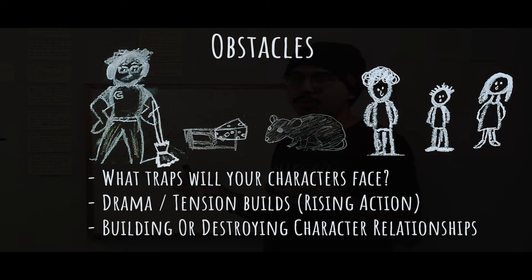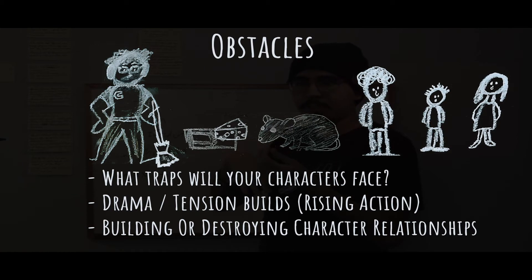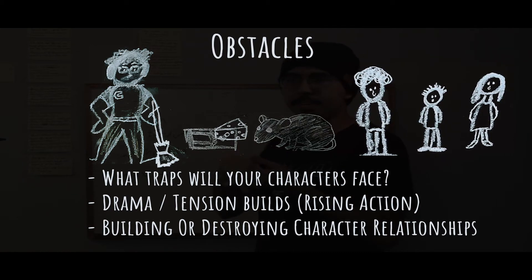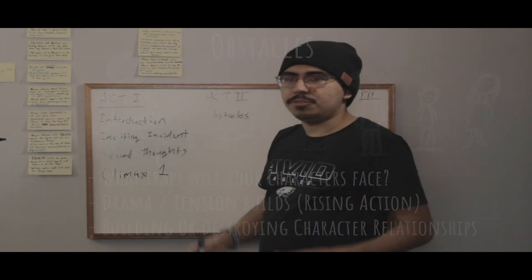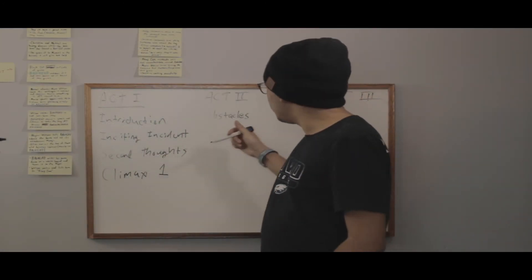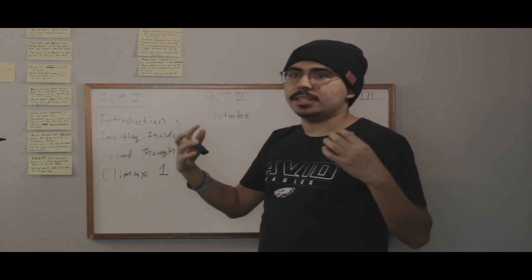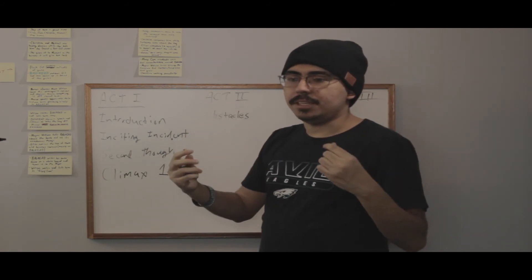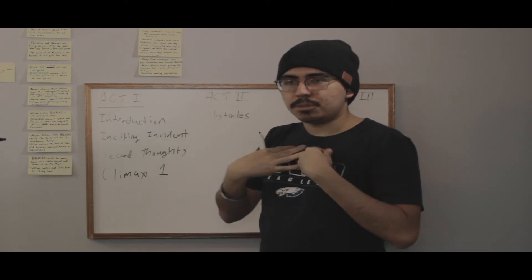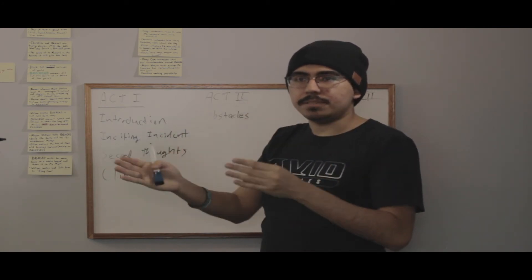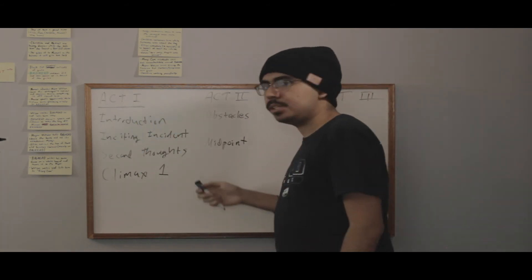It basically shows that this is not going to be an easy battle, and it of course results in act two obstacles. This is basically what act two is mainly about — what obstacles your main character or supporting characters are going to face trying to defeat your inciting incident. If you see movie trailers, a lot of the footage used is from act two, because that is where a lot of the battles happen, where a lot of the tension starts to build, and how your characters perceive themselves and others.